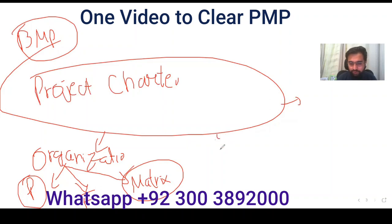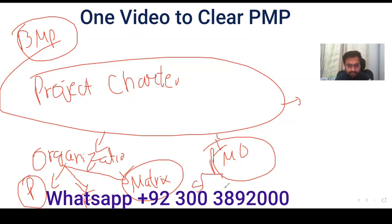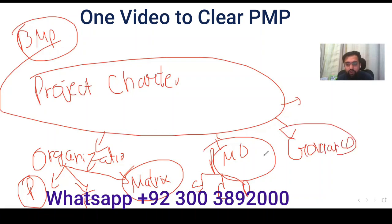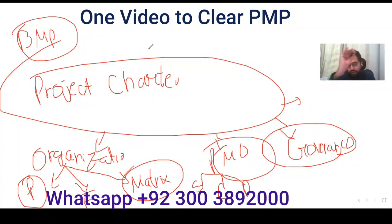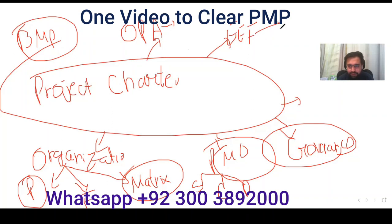You need to know if there is a PMO — project management office — and what level it is: supportive, controlling, or directive. Then you need a governance structure to control risk and other things. You also need to understand organizational process assets (OPA): lesson learned documents, tools, and templates — lesson learned is very important. And Enterprise Environmental Factors (EEF) can be internal — work authorization system, project management information system, culture, customs — or external like marketplace conditions.